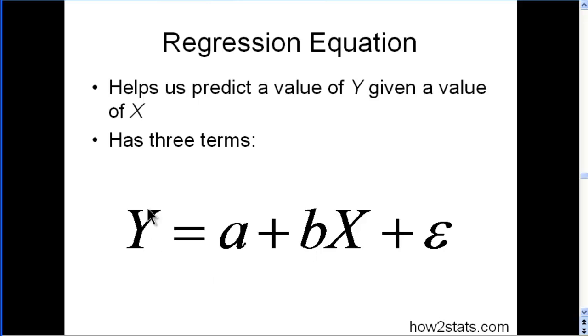Y scores, that is colds, number of colds, equals intercept—this is the intercept, also known as alpha. And this is the slope, also known as beta, multiplied by the number of values associated with the X variable, in this case stress.